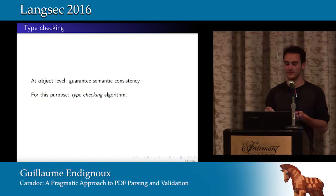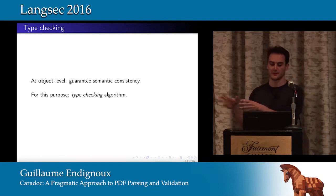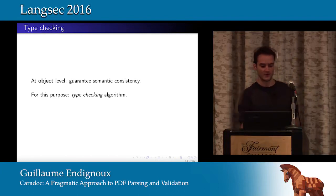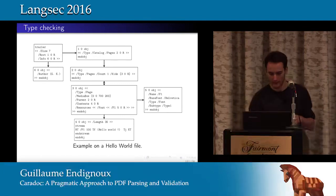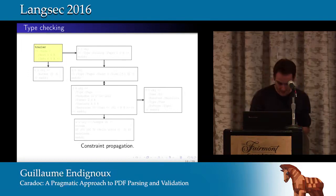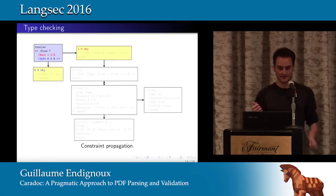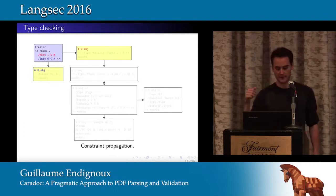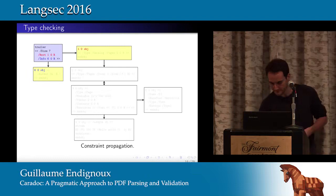At the object level, we want to guarantee semantic consistency. If a page references an image, we want to be sure that object is actually an image and not something else. We implemented a type-checking algorithm that works by type inference. We start type checking with the trailer — the logical root — so we know this object should have the type "trailer." We infer this type, then check that each field is correct and conforms to the type specification.